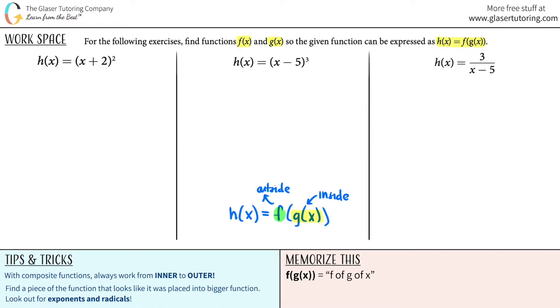Now in order to make the puzzle work properly, here's a little trick down at the bottom left. We have to find a piece of the function that looks like it was placed into a bigger function. The key is exponents and radicals. Now let's try to get one down.